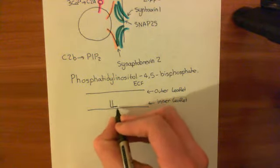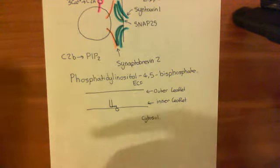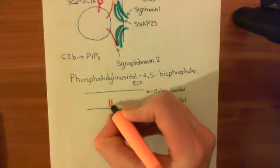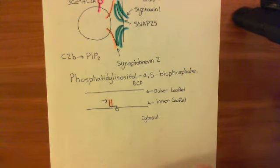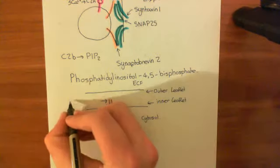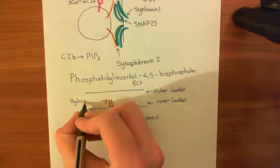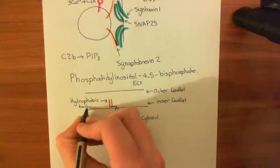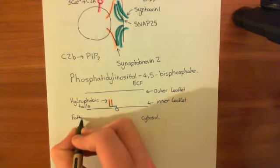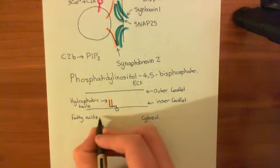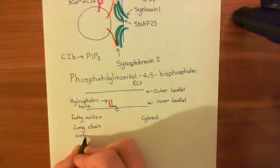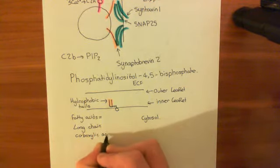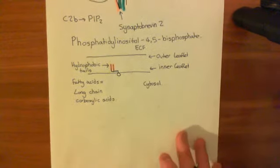Let's draw one of these phospholipids. These two vertical lines, coloured in orange, represent the long-chain carboxylic acids which are esterified to the first and second hydroxyl groups of the glycerol, which forms the backbone of the phospholipid. These are the hydrophobic tails of the phospholipid. They are formed from esterifying fatty acids — what biochemists call fatty acids, or what chemists would call long-chain carboxylic acids. Fatty acids are still very pervasive in biochemistry, even though hardcore chemists are trying to change the name.